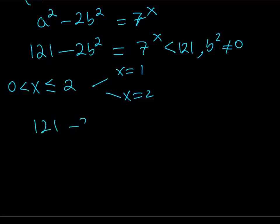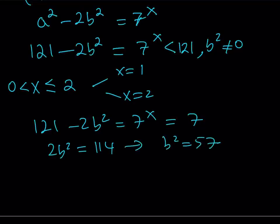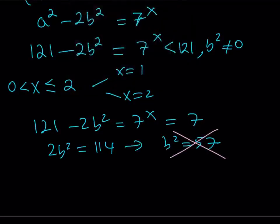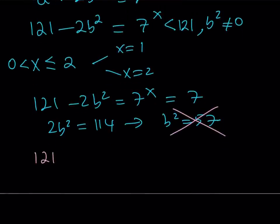My equation is 121 - 2b² = 7^x. If x is equal to 1, this is going to be 7 from here. If x is equal to 1, then 2b² is going to be 114. This doesn't look good. Uh-oh. b² equals 57, but b is an integer. Therefore, this is not going to work, unfortunately. Okay, great. Let's go ahead and test the other x value. So this is for x equals 1. It didn't work. Let's try x equals 2.